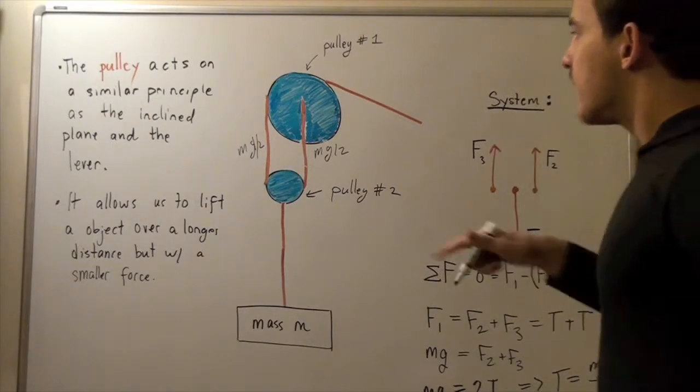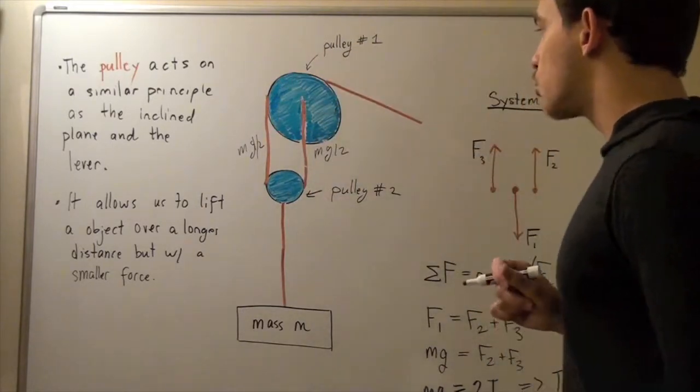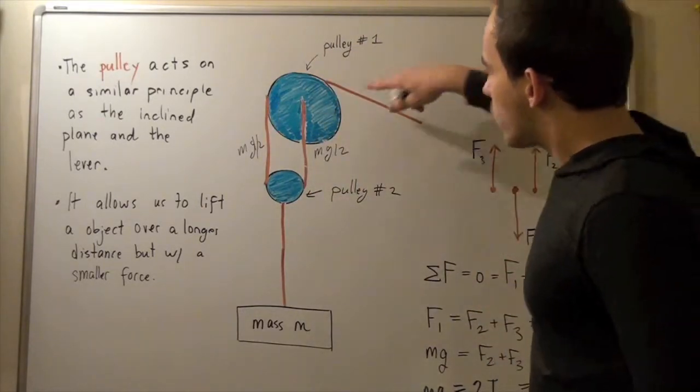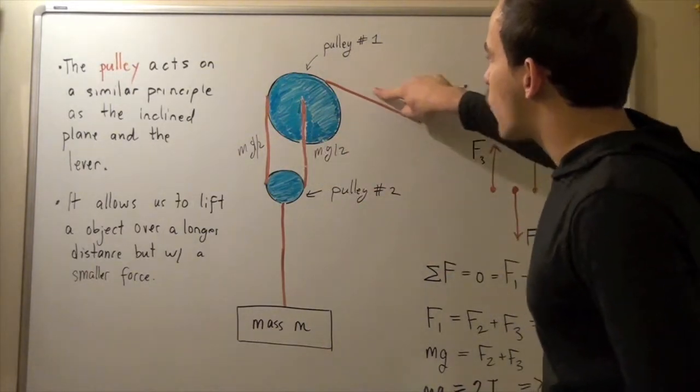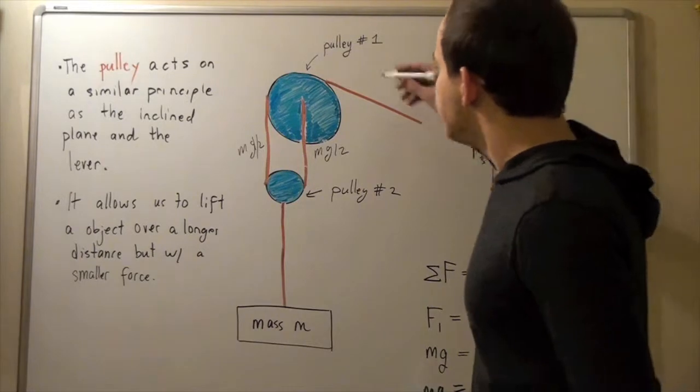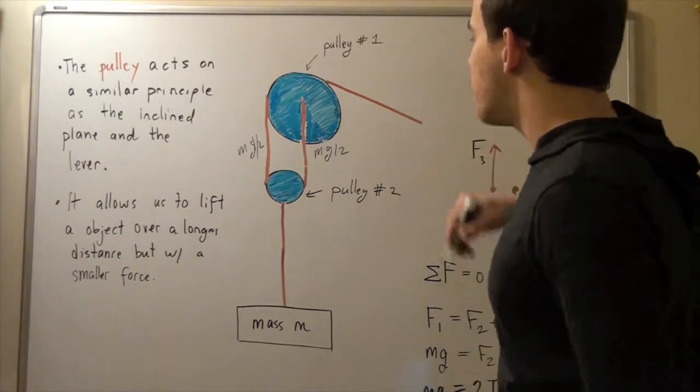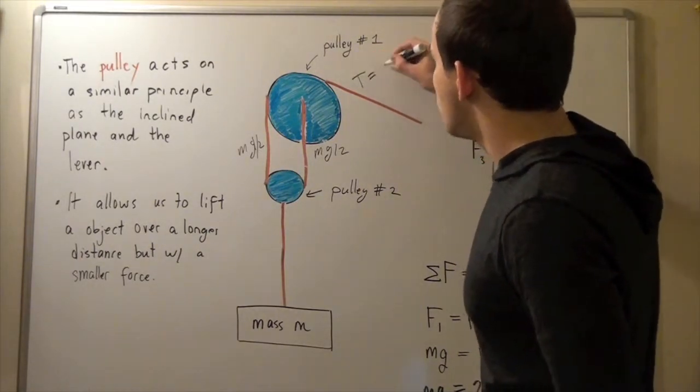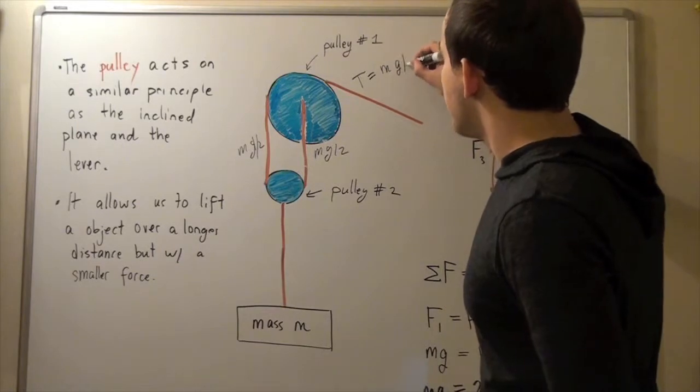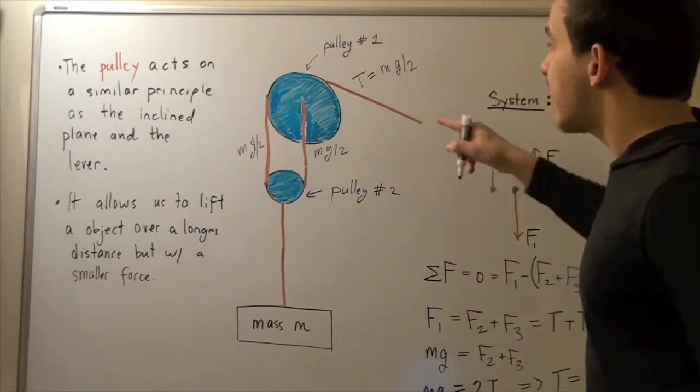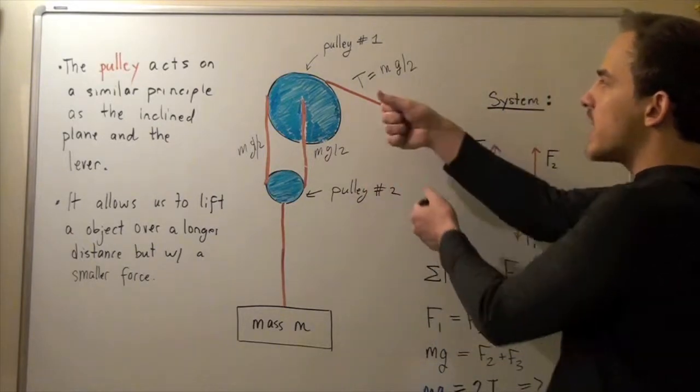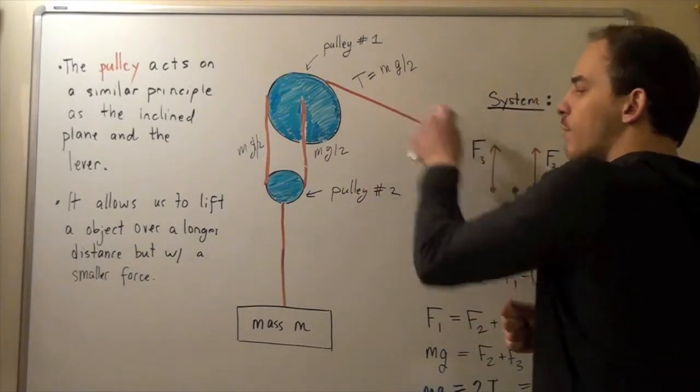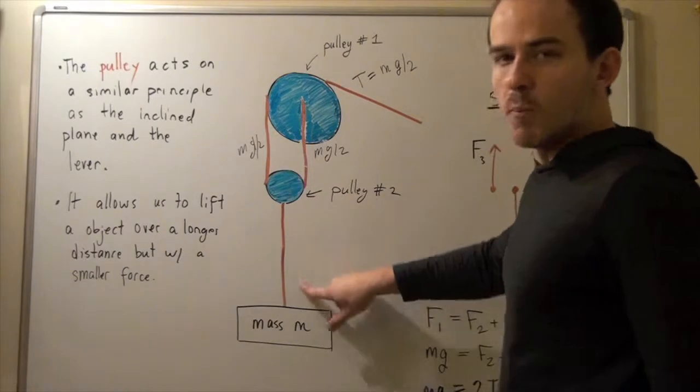Now, notice the following. Since this is one continuous rope, that means whatever force we have in these two ropes, we have the same exact force in this rope. So that means the tension in this rope is also T, which is equal to Mg divided by 2. So, notice that the force with which we're actually pulling on that object is now half of that force that this rope experiences.